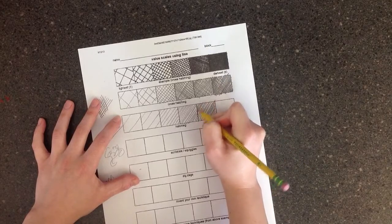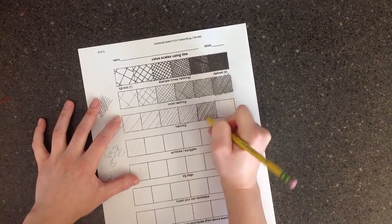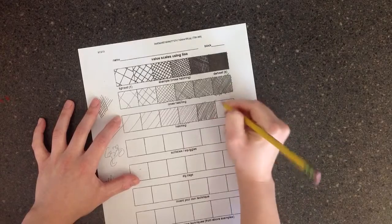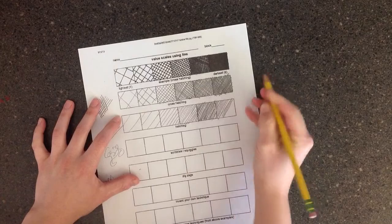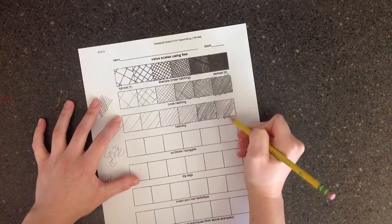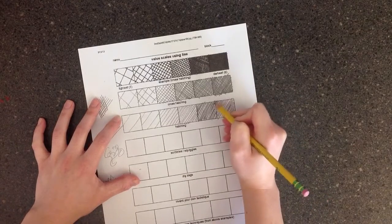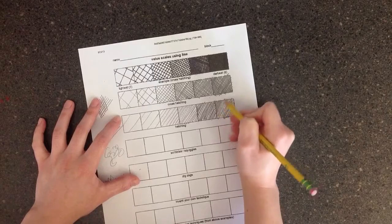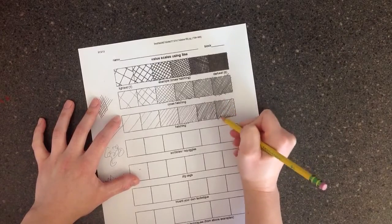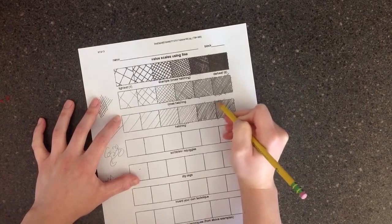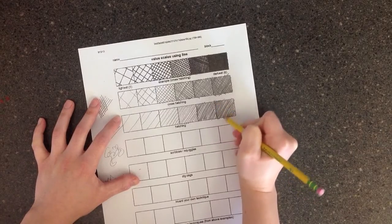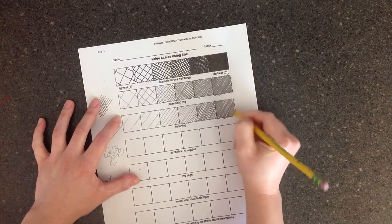And again, if you don't think it's dark enough, you can do another layer. And then your darkest layer, your darkest value is going to be lines touching completely.